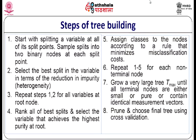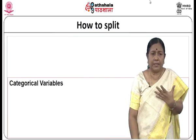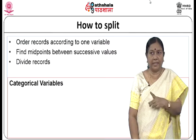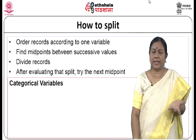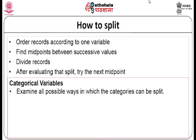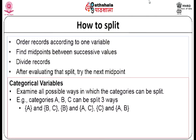You will grow a very large tree called T-max until all terminal nodes are either small, pure, or contain identical measurement vectors. Then prune and choose the tree using cross-validation. To split: order records according to one variable, find midpoints between successive values, divide the records, evaluate that split, then try the next midpoint — this is for one variable. Remember, this must be tried for each and every variable.